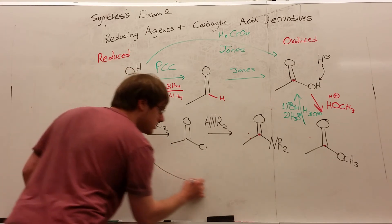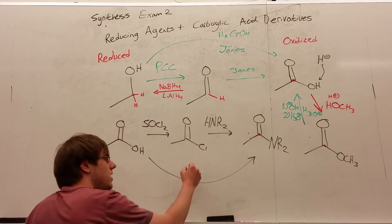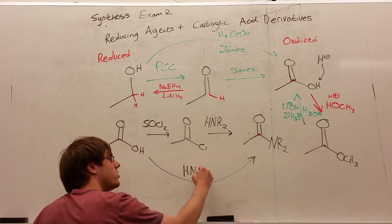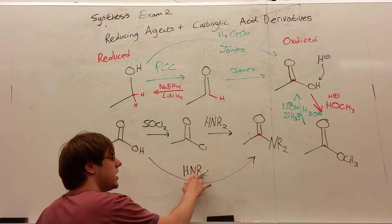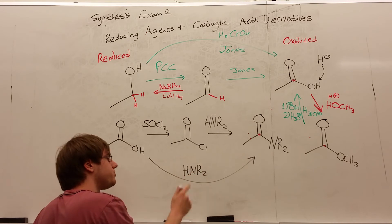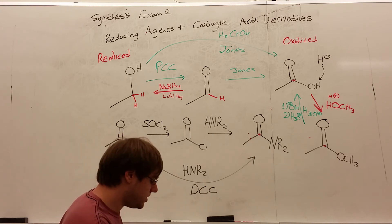The other way of doing that is only one step, or the other way of doing this is only one step, and this is, you put the HNR2 over the arrow, so the nitrogen with one extra hydrogen, so it's neutral, with its two R's, be they hydrogens or carbons, and then you use DCC.